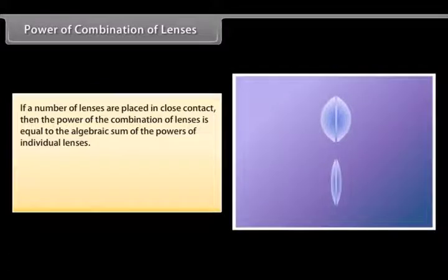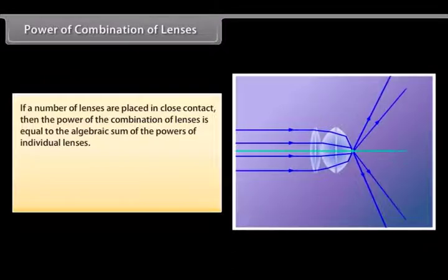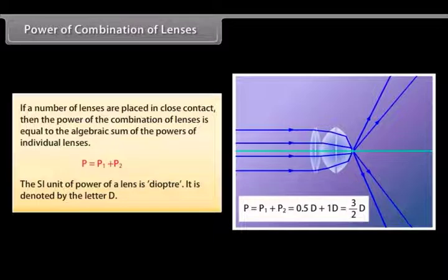Power of combination of lenses: If a number of lenses are placed in close contact, the power of the combination is equal to the algebraic sum of the powers of individual lenses: P = P1 + P2. The SI unit of power of a lens is the diopter, denoted by D.